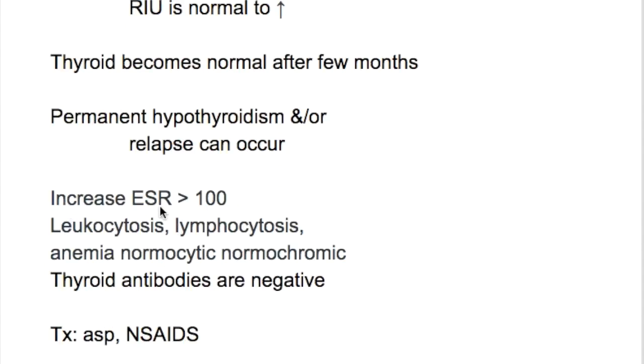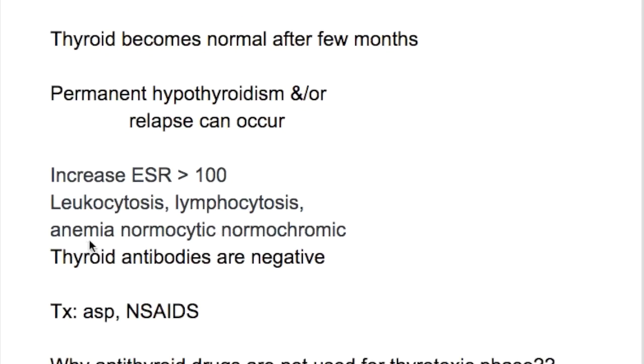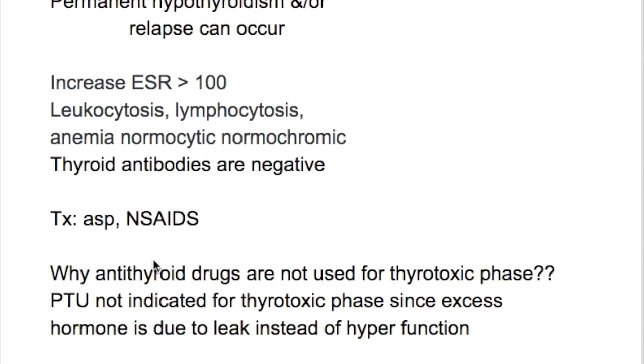The laboratory features include increased ESR of more than 100, leucocytosis, lymphocytosis, normocytic normochromic anemia, and thyroid antibodies are negative.